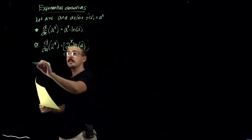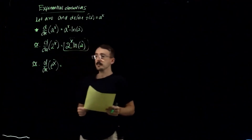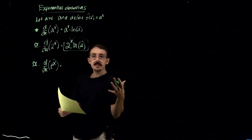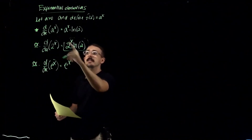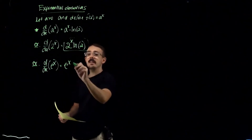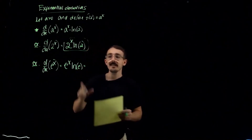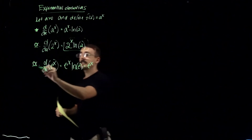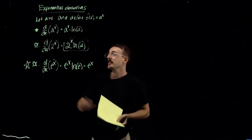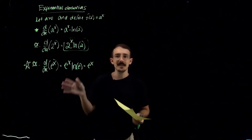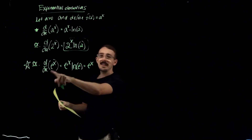Let's look at a slightly more interesting example: the derivative of e^x. Here e is a positive constant, so it stands for our a. Repeat e^x and take ln of the base e. But ln(e) = 1, so it cancels, and we get e^x. This is very important — the derivative of e^x is e^x. It's going to come up all the time, so star it.